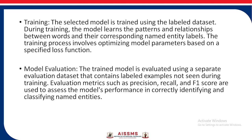Training: the selected model is trained using the labeled dataset. During training, the model learns the patterns and relationships between words and their corresponding named entity labels. The training process involves optimizing model parameters based on a specified loss function. Model evaluation: the trained model is evaluated using a separate evaluation dataset containing labeled examples not seen during training. Evaluation metrics such as precision, recall, and F1 score are used to assess the model's performance in correctly identifying and classifying the named entities.